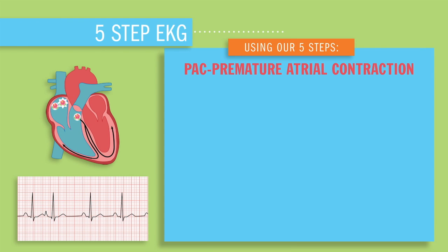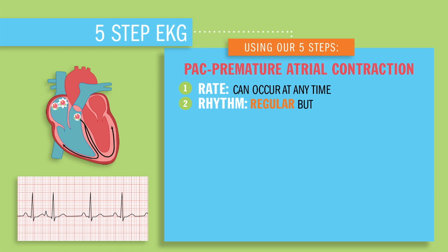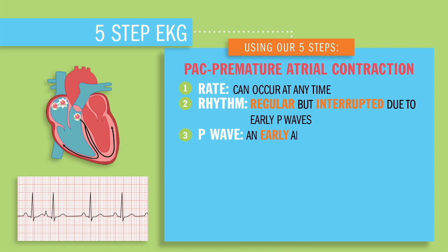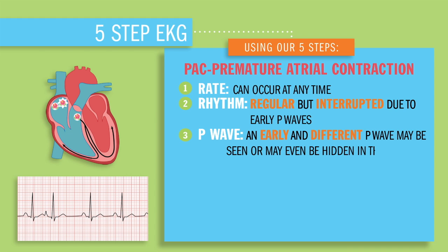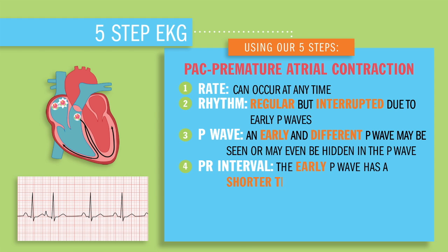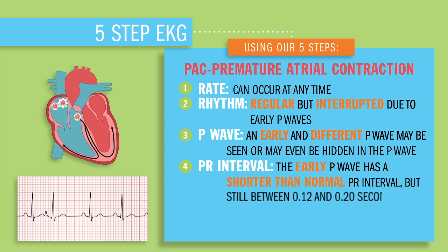So what's this going to look like on an EKG? Well, using our five steps, let's interpret this EKG. For a PAC, the rate can occur at any time. The rhythm is regular but usually interrupted due to early P waves. The P wave is early — that's the biggest part of this — and often may be hidden in the T wave. The early P wave has shortened that normal PR interval, but still has between 0.12 to 0.20 seconds.